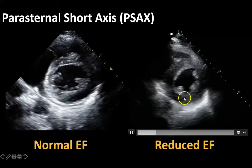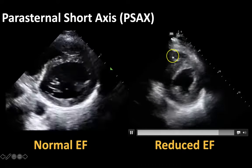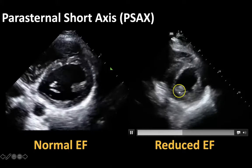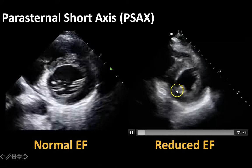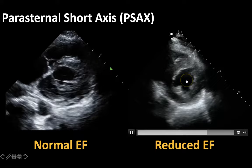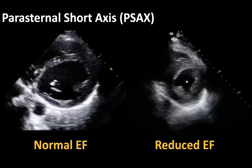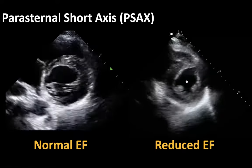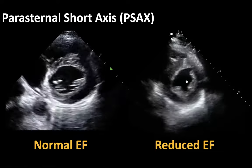This is the same cut — your parasternal short axis view — with your left ventricle and right ventricle, at the level of the papillary muscles. If you picture putting your finger in the middle of this ventricle, you'll see that the walls are really not coming anywhere close to it. This is certainly a heart with a reduced ejection fraction.